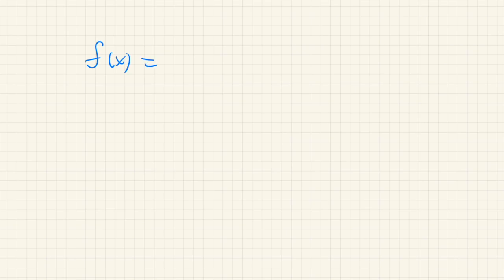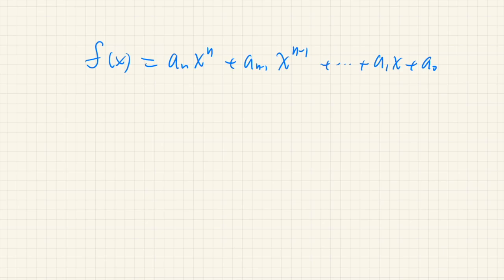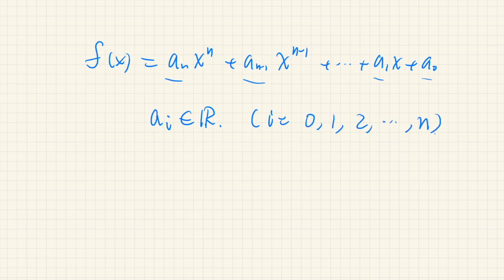The simplest kind of algebraic functions are polynomials, such as f(x) = a_n x^n + a_{n-1} x^{n-1} + ... + a_1 x + a_0, where a_n, a_{n-1}, ..., a_1, a_0 are all real numbers, and i ranges from 0, 1, 2 up to n. These are called polynomial functions.